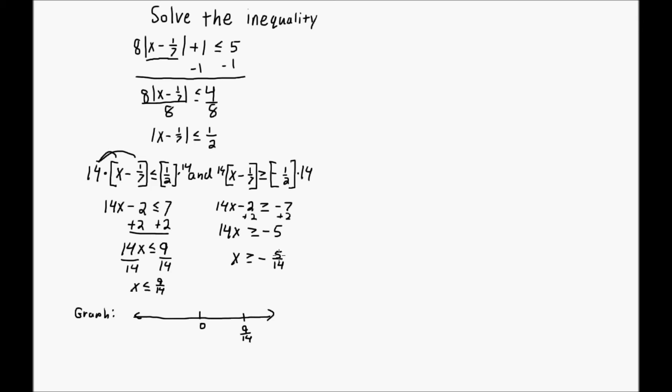Now if this is 9 over 14, then 5 over 14 can't have the same distance as 9 over 14. It's got to be a little less, and it's going to be to the left because it's negative. So I'll put it right here. Negative 5 over 14.